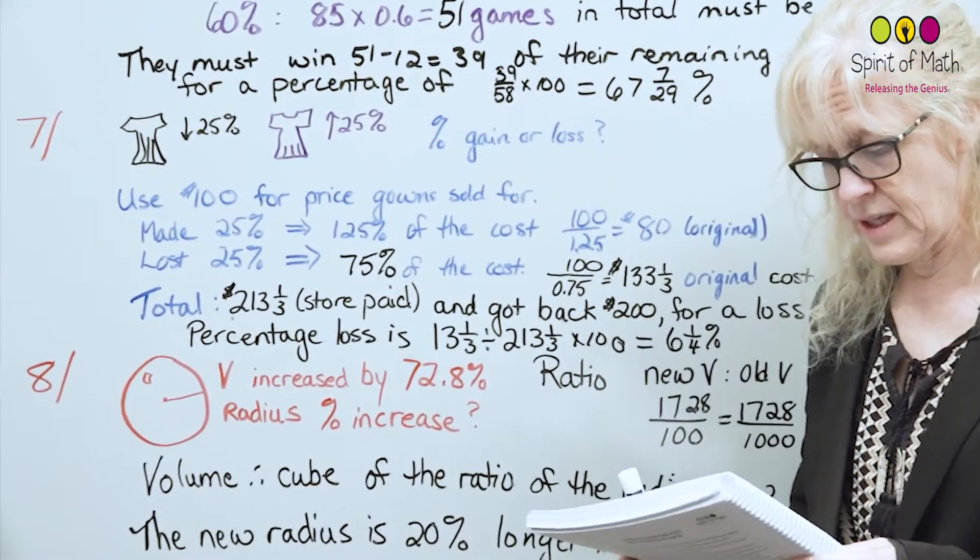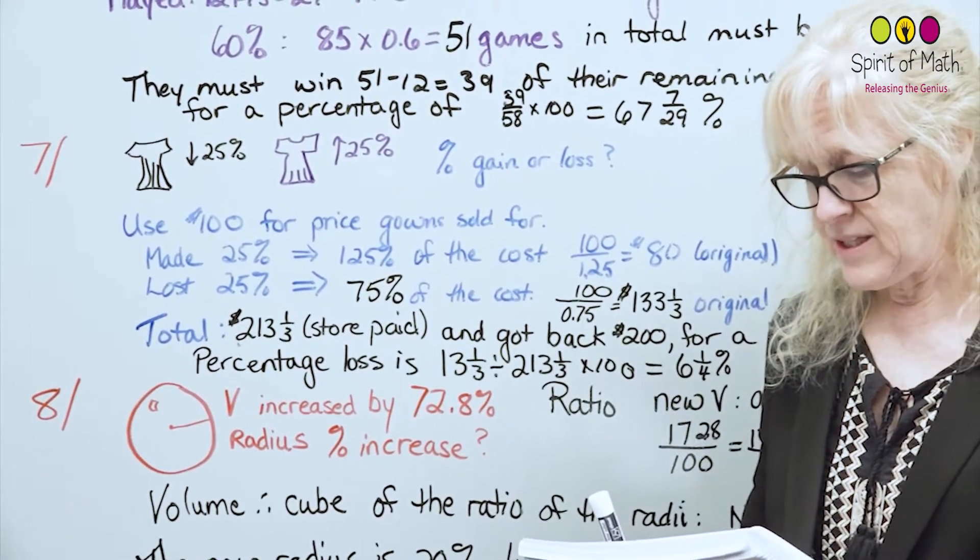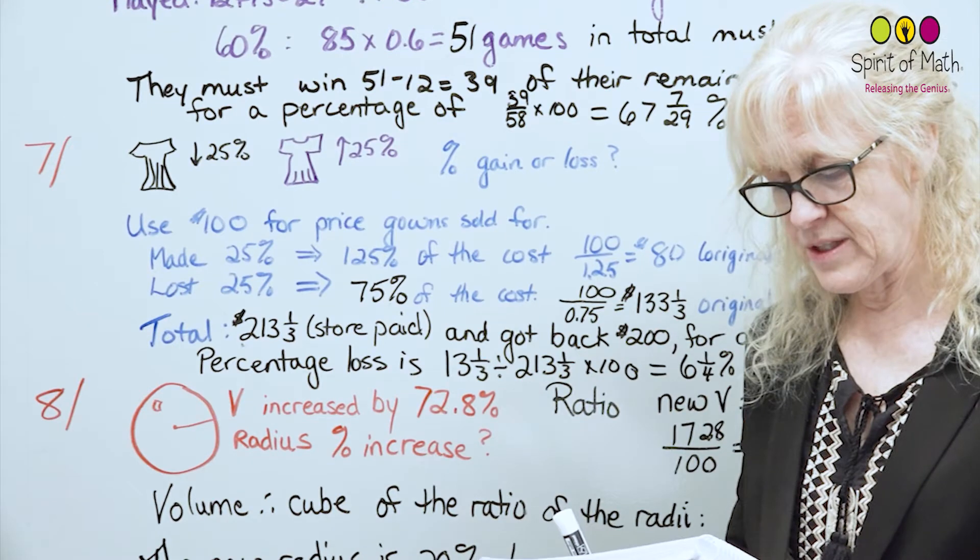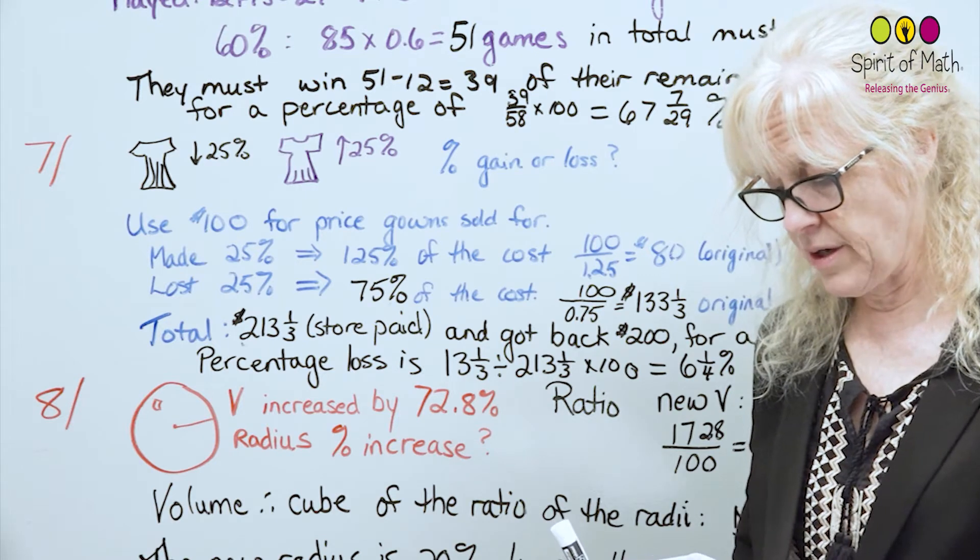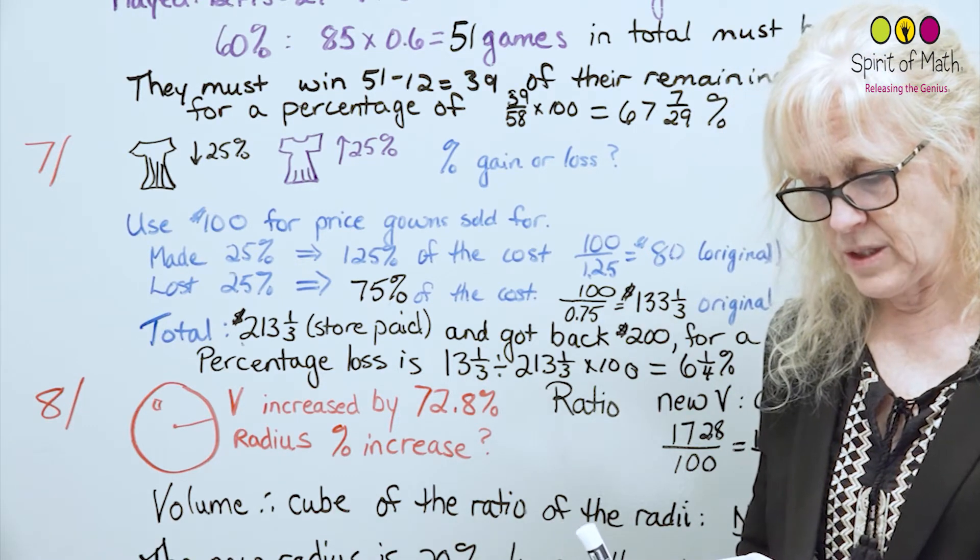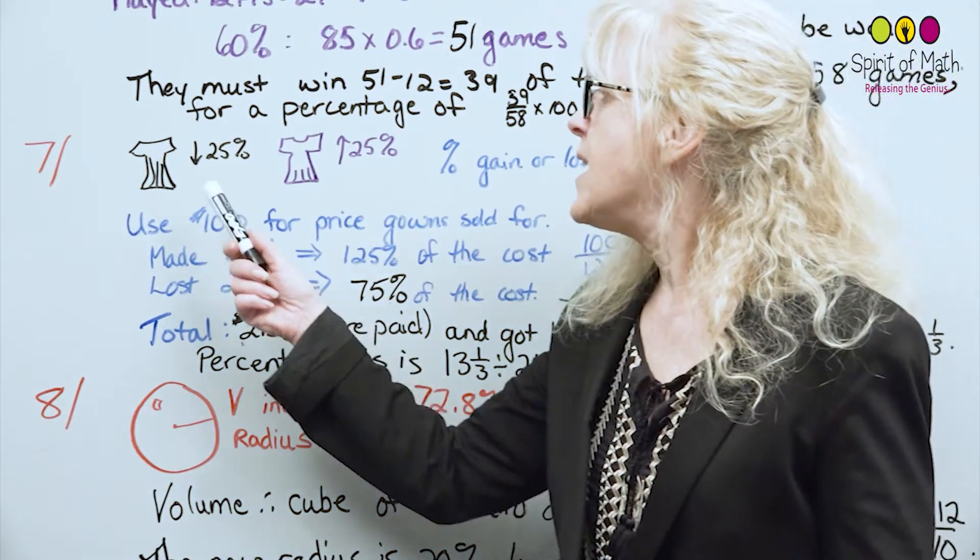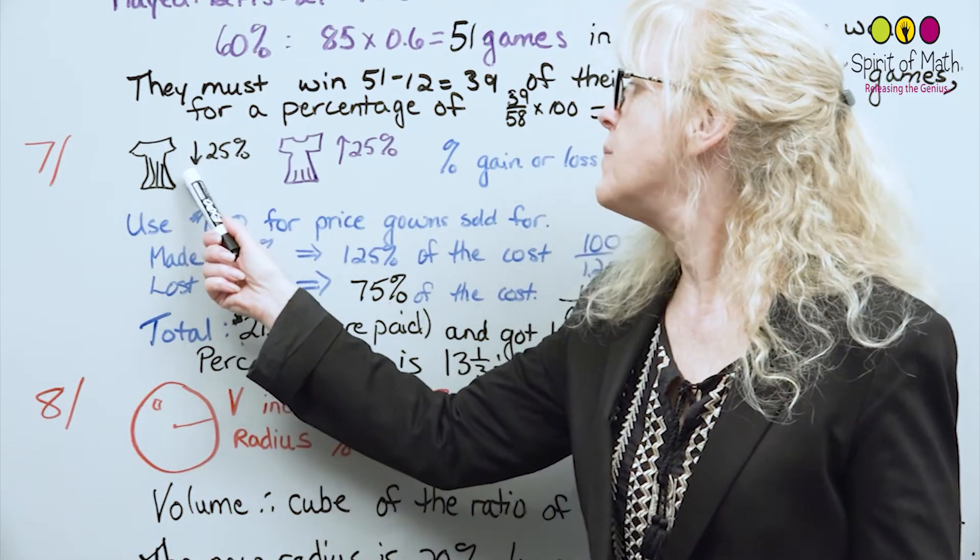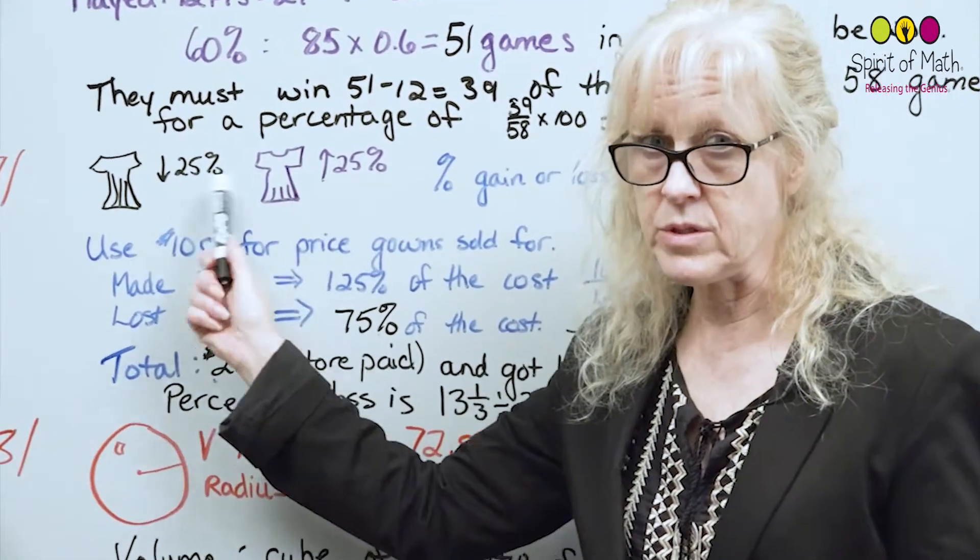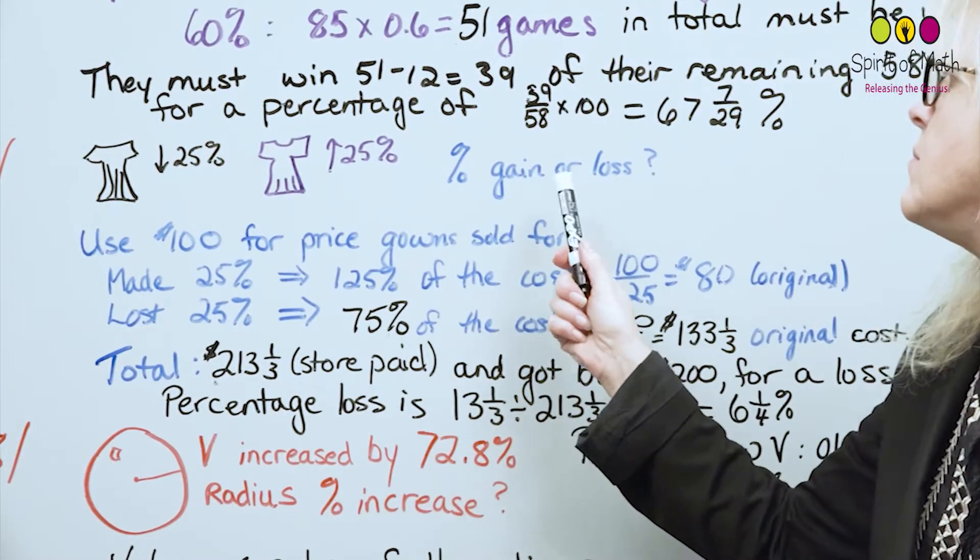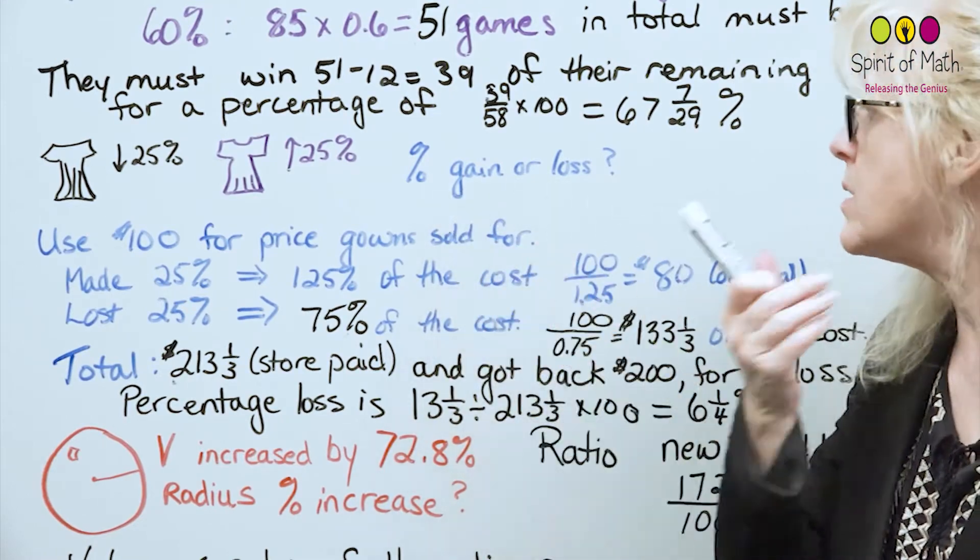Number seven says Martha's Millenary sold two evening gowns at the same price. Based on their cost, the store made 25% on one of the gowns and lost 25% on the other. As a result of these transactions, what was the percentage gain or loss? Basically, they had one gown where they lost 25%, another they gained 25%, but they sold them both for the same amount. And was there a percent, or what was the percent gain or loss?